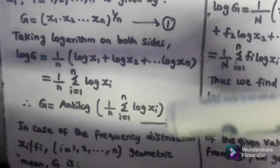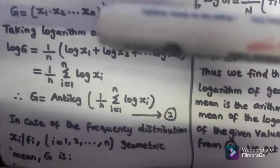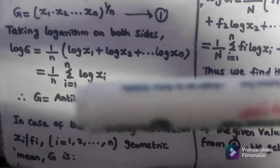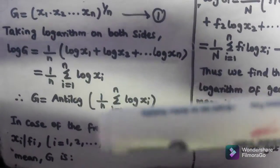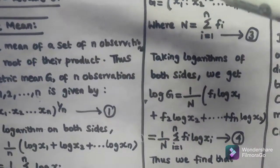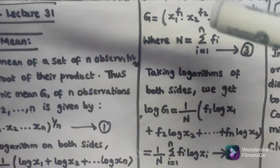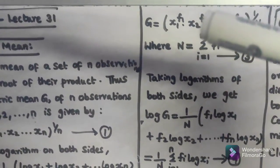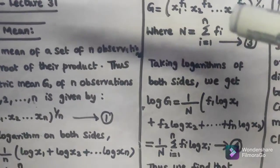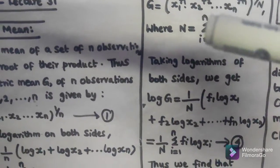In case of the frequency distribution xi / fi where i varies from 1 to n, the geometric mean G is equal to x1^f1 · x2^f2 · ... · xn^fn, the whole to the power of 1/N, where N = Σ(i=1 to n) fi.